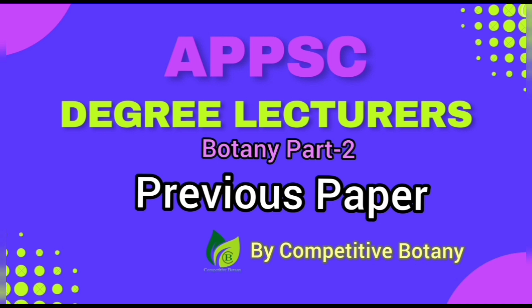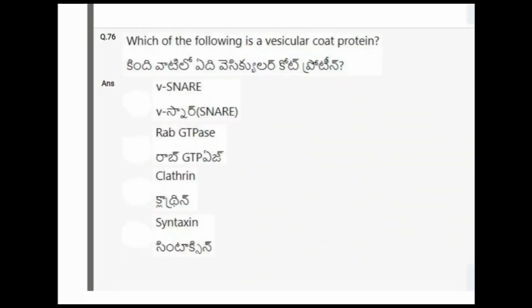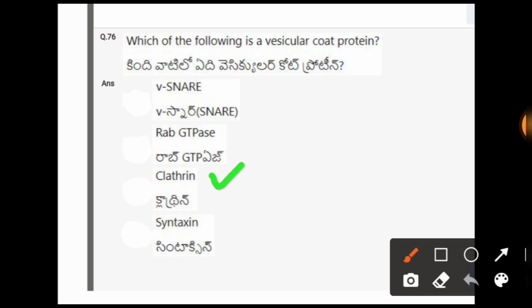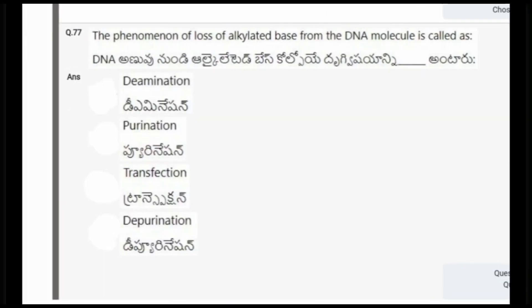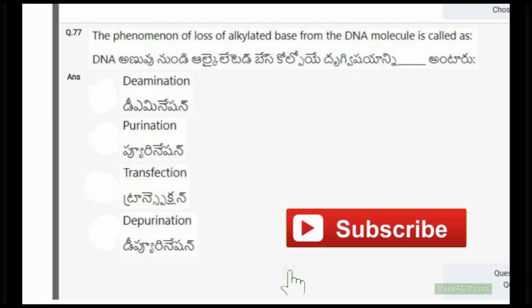The test was conducted on 15th September 2020. Let's see the questions one by one. Question: Which of the following is a vascular coat protein? The options are V-SNARE, Rap GTPase, Caltrin, Syntaxin. The correct option is the third one, Caltrin.